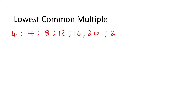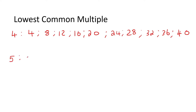I'm going to go up to 40: 32, 36, 40. Now let's say we took the number 5. Let's do the multiples of 5 — I'm going to go up to 50.